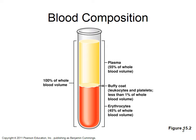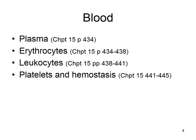Then 55% was plasma — the water portion. So we're going to talk about plasma, then erythrocytes, then leukocytes, and then platelets and hemostasis. This is all in Chapter 15. We're covering blood first because it's a nice easy break before we do cardiovascular physiology.